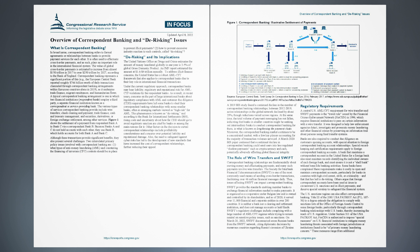The value of global cross-border payments is estimated to increase from almost $150 trillion in 2017 to over $250 trillion by 2027, according to the Bank of England. Correspondent banking represents a significant portion of this — for example, the European Central Bank reported roughly $746 billion worth of daily transactions channeled through Correspondent Banking arrangements within eurozone countries alone in 2019.